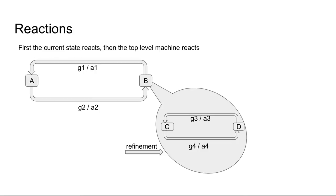What about reactions when we have practically two state machines working in this way? First, the current state reacts, which might be one of the refinement states, and then the top-level machine reacts also.